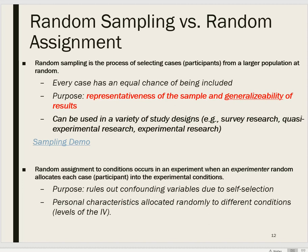In any case, random sampling is a design element that involves selecting participants at random to make a sample that is reasonably representative of the population, which in turn allows you to generalize your results back to the population — which is essentially what we're trying to do when we conduct inferential statistics.